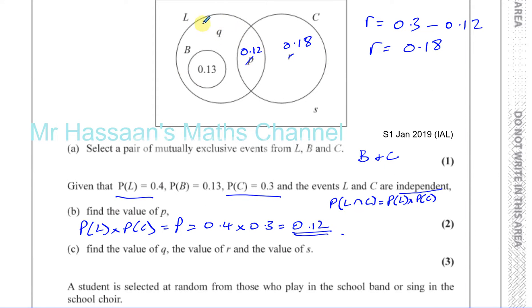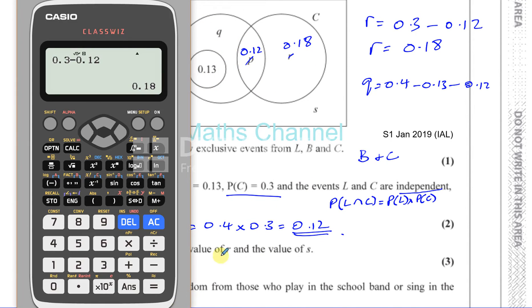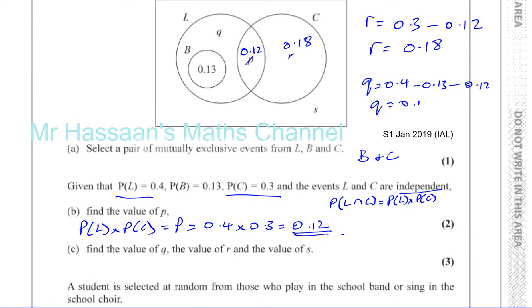For Q, we know the probability of L is 0.4. Q is going to be 0.4 minus 0.13 minus 0.12, because these three regions together make up all of L. So Q = 0.4 minus 0.13 minus 0.12, which gives 0.15.